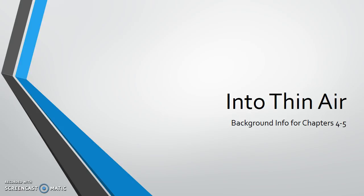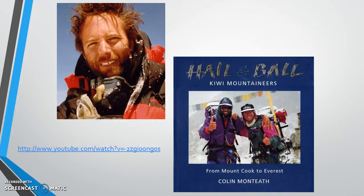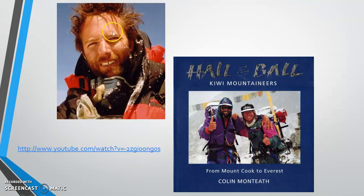I want to go over some background information for chapters four and five, just so you can get a visual image of what they're talking about. We are introduced to Rob Hall — there's a picture of Rob Hall — and we're also introduced to his client partner Gary Ball. I think this was back in chapter three. But I did just want to show you some images of what they look like. This is Rob Hall and this is his client partner right here. And here's a picture of Rob.